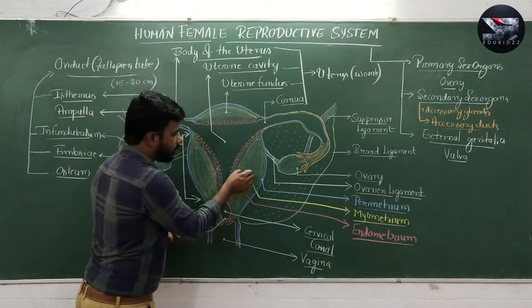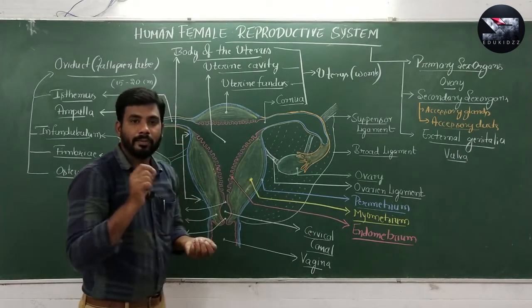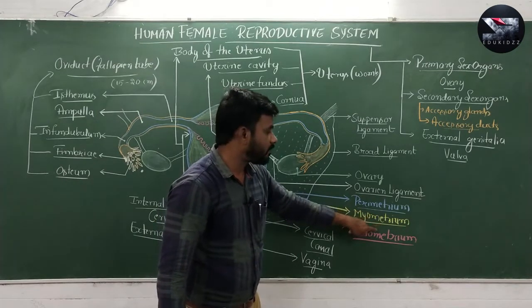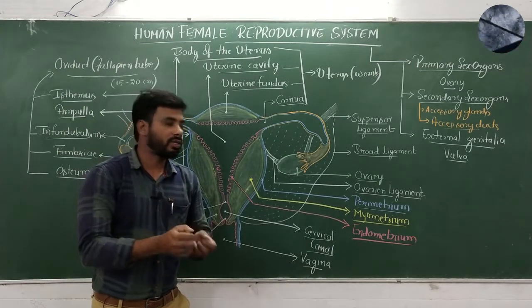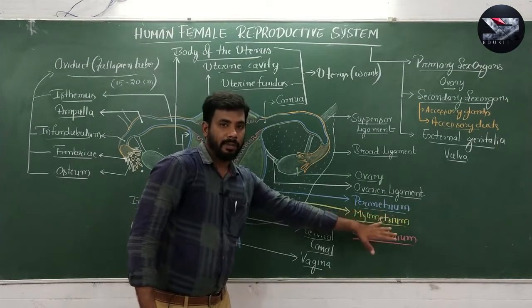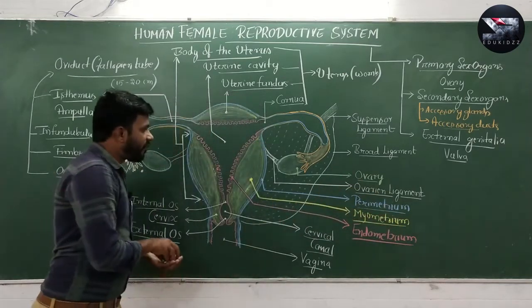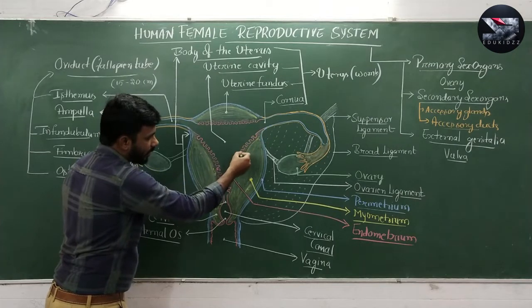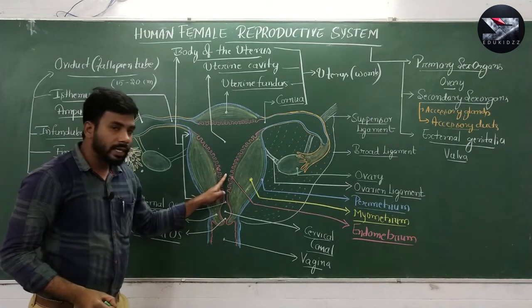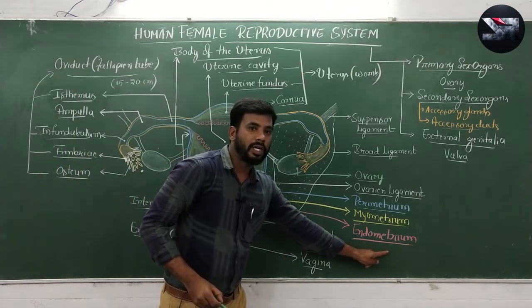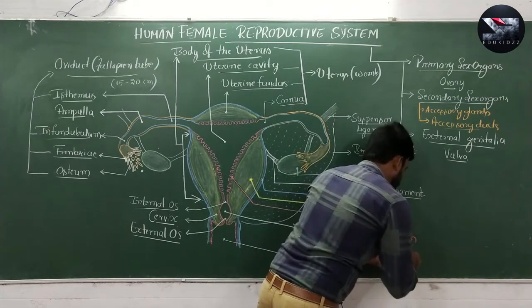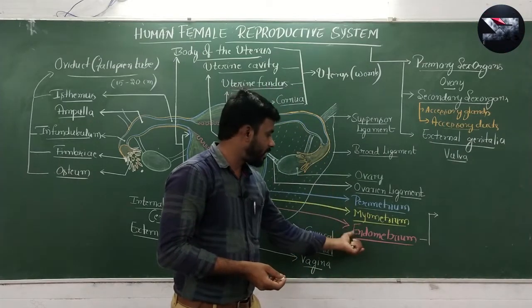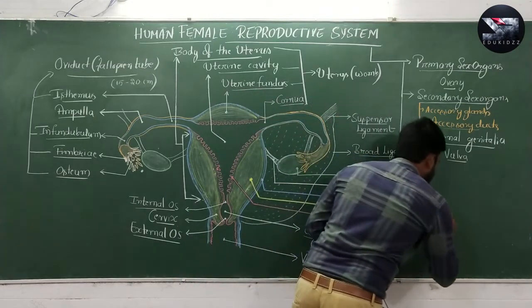The perimetrium is followed by a thick portion mainly made up of smooth muscles called the myometrium — 'myo' means muscle. The myometrium helps in the strong contractions of the uterus during childbirth or delivery of the baby. Finally, the innermost layer, represented in red in the diagram, is a highly glandular and vascularized layer called the endometrium. The cyclical events during the menstrual cycle mainly take place in this endometrium layer.